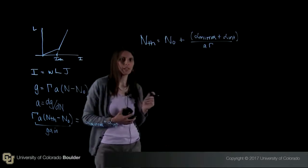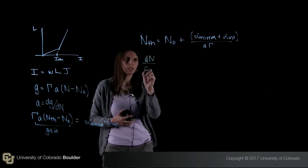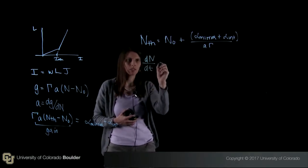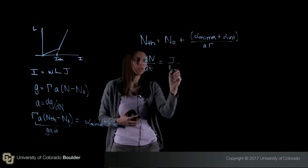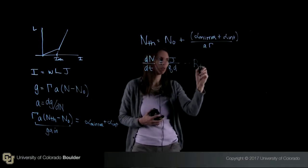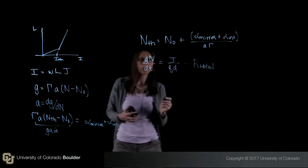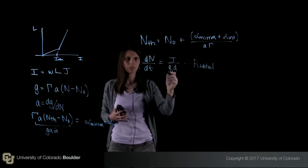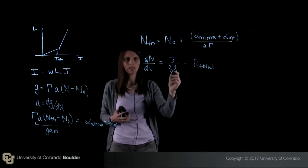So let's go ahead and write down an expression for the number of carriers as a function of time in the semiconductor laser. dn/dt equals j over qd minus r total. j over qd are the number of carriers that are injected per second per volume. d is the height of the active region, and r total is the total recombination.